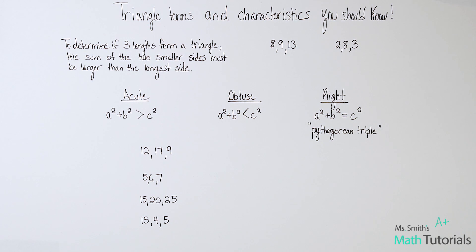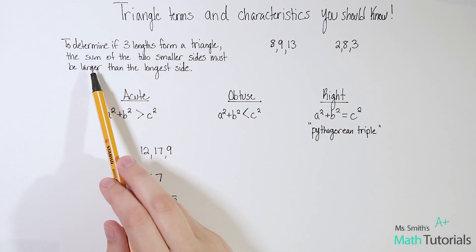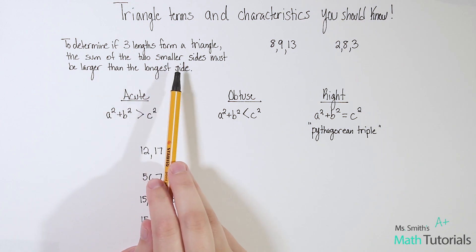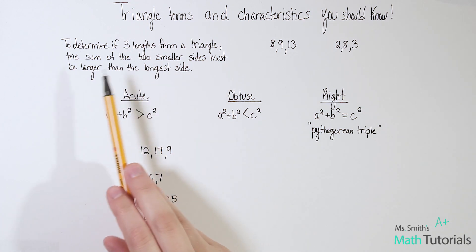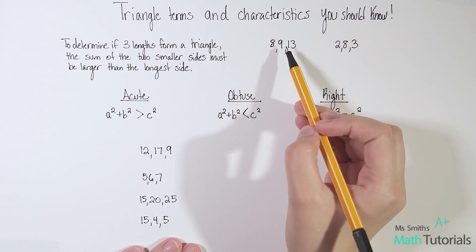The first thing we're going to talk about is how you could tell if three given sides actually form a triangle or not. The way we can tell that is to determine if three lengths form a triangle, the sum, remember sum means adding, the sum of the two smaller sides must be larger than the longest side. So we just have to add the two smaller sides and say are they bigger than the longest side? So here's a couple examples.